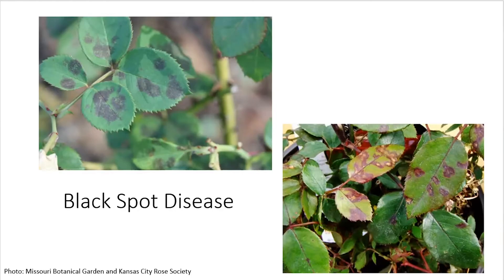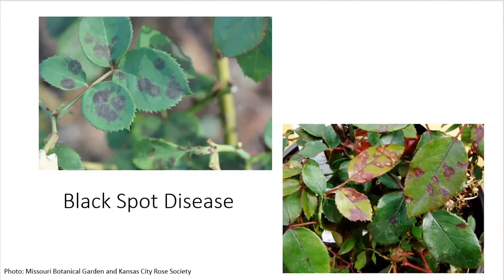So the symptoms — if you look at this photo, you can see the black spot. It's around one and a half inches in diameter and mostly on the top side of the leaf. Over time the leaf will turn yellow and eventually it will drop on the ground. It usually causes the leaves to drop prematurely and the symptoms will progress from bottom to top.